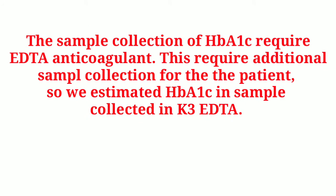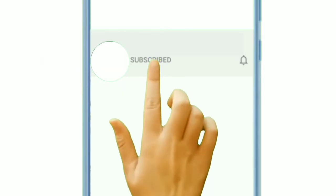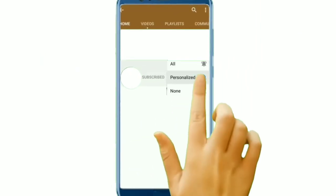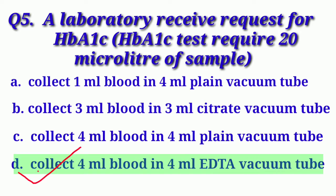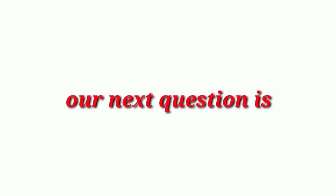This requires additional sample collection for the patient. So we estimate HbA1C sample collected in K3 EDTA. Our correct option is Option D: Collect 4 ml blood in 4 ml EDTA vacuum tube.